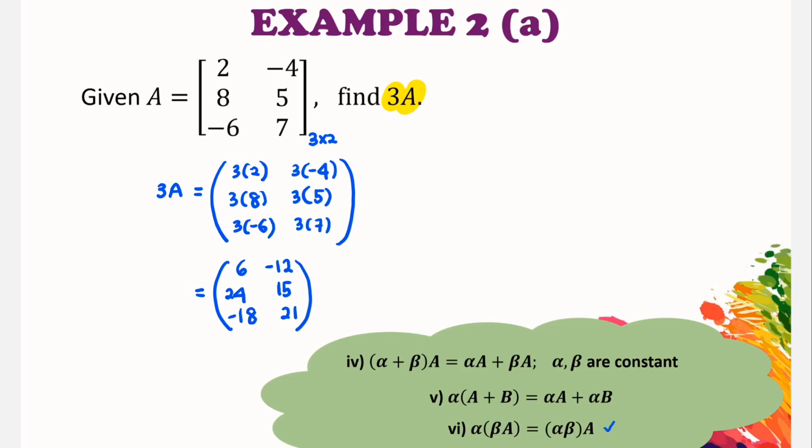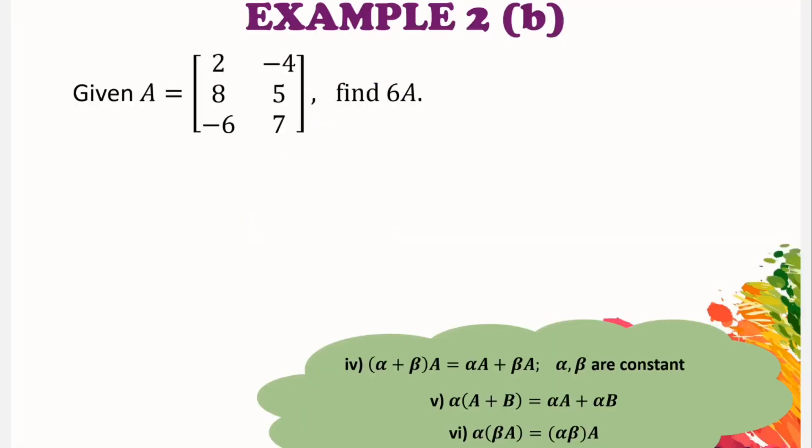So now let us try the second part of the question. For this part B question, we have two options. Either we multiply 6 directly with matrix A or we can apply rule number 6.